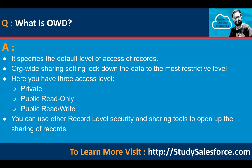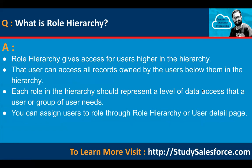For controlling object and field permissions, we have profiles, permission sets, and permission set groups. But if you want to control record sharing, we have OWD, and then role hierarchy. What is role hierarchy?